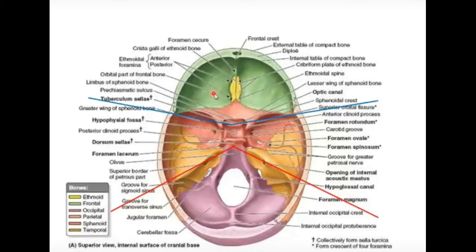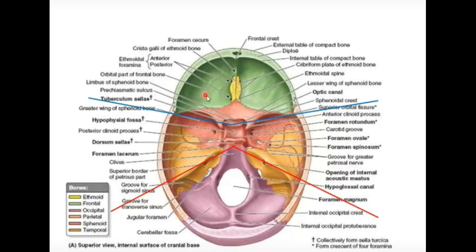The floor of the anterior cranial fossa — in its lateral part — is formed by the orbital plate of the frontal bone. The frontal bone as a whole is shown in green, but this laterally present part is called the orbital plate. It is a thin plate of bone present between the anterior cranial fossa and the orbit — because if you remove this part of the frontal bone, you will enter into the orbital cavity.